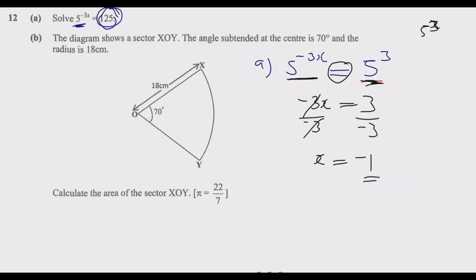The diagram shows a sector XOY where the angle subtended at the center is 70 degrees and the radius is 18 cm.